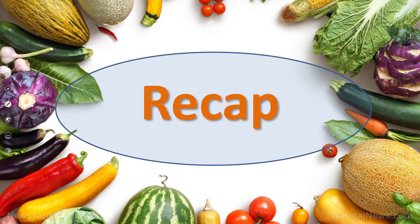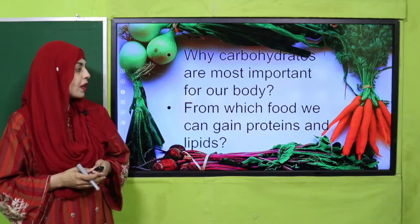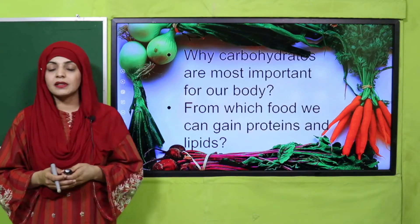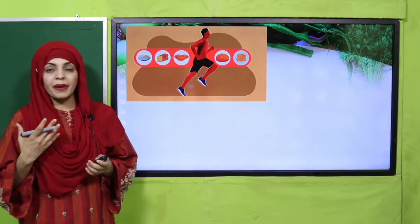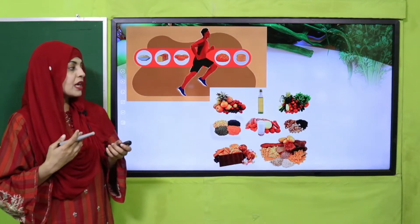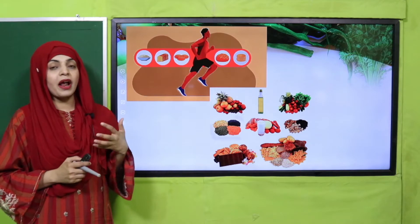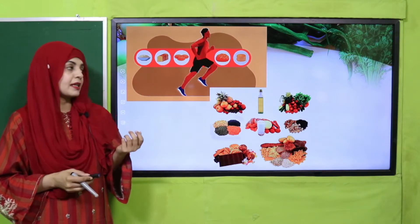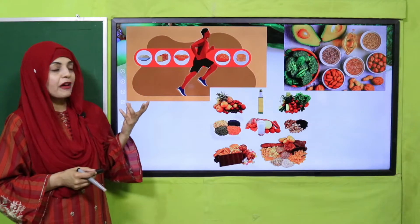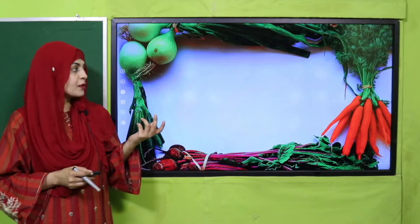Let's recap what we did in the previous lecture. Quickly tell me: why are carbohydrates most important for our body? Very good. From which food do we gain proteins and lipids? Carbohydrates are the fuel of the body. We get proteins from meat, different fruits, and milk, whereas we get fats from oil, ghee, different meats, and nuts. So proteins, carbs, and fats we have already discussed.